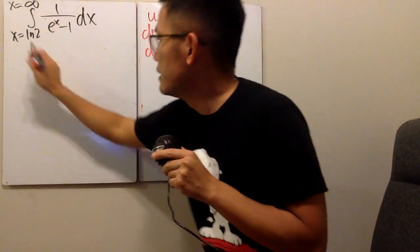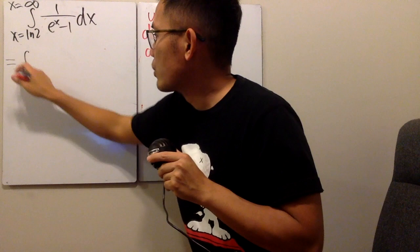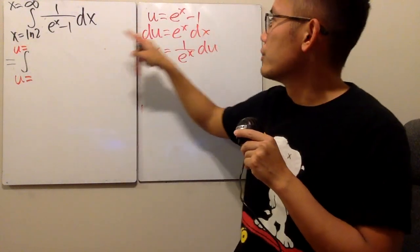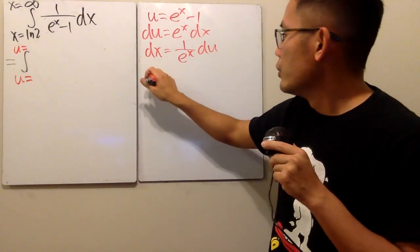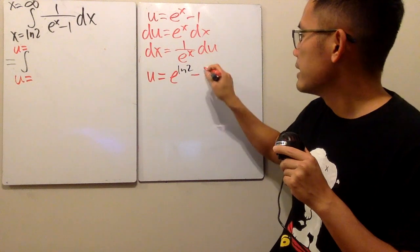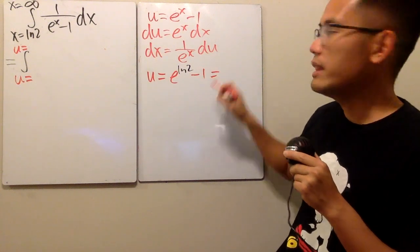Now have a look. This is going to be the following. Integral, again, we are going to change the numbers. X is going from ln two, right? So put the ln two here. u will be equal to e to the ln two minus one, which is just two minus one, that's one.